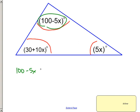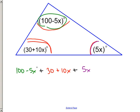If I took the first angle here, 100 minus 5x, and then I add that to the second angle, 30 plus 10x, and then I add that one to the last angle, the third angle, the 5x, we know that if we knew the measure of all three angles that it would indeed add up to be 180 degrees. So now we just have an algebraic equation that we need to solve.